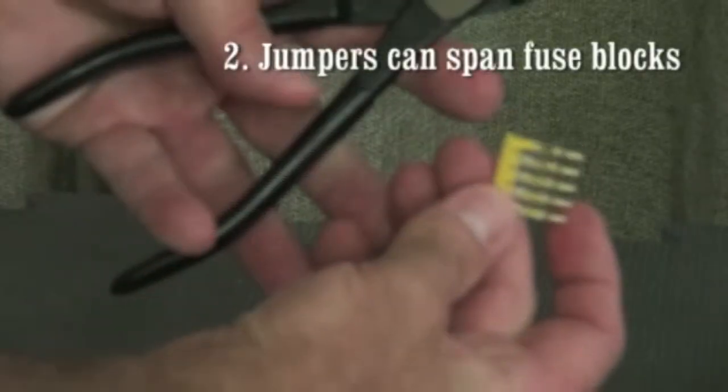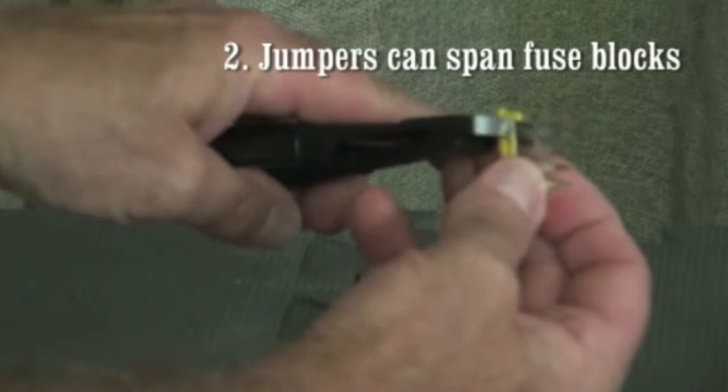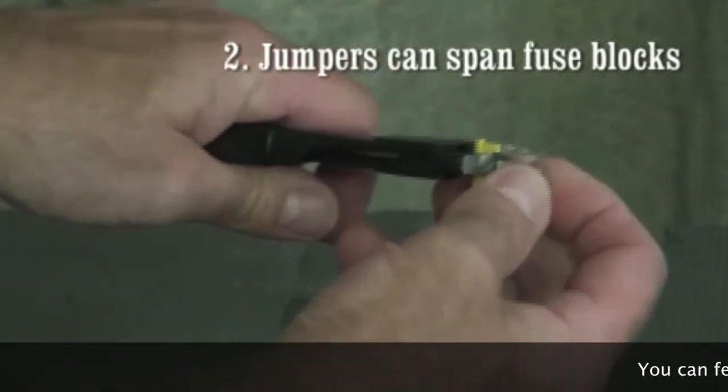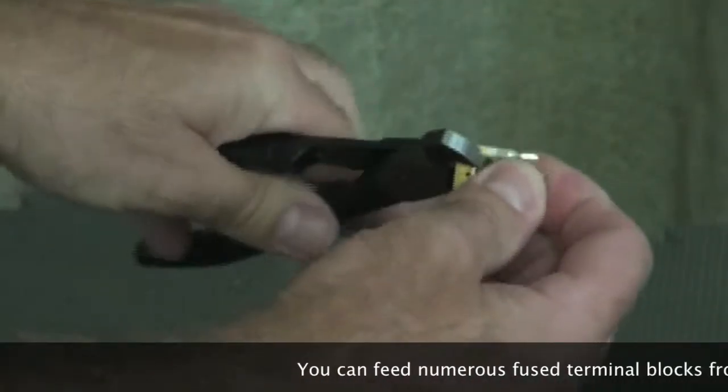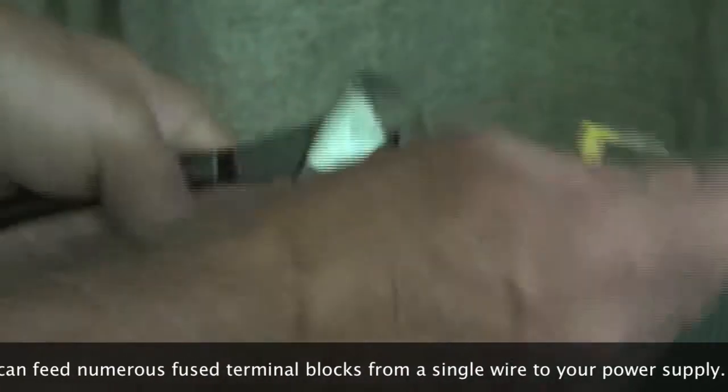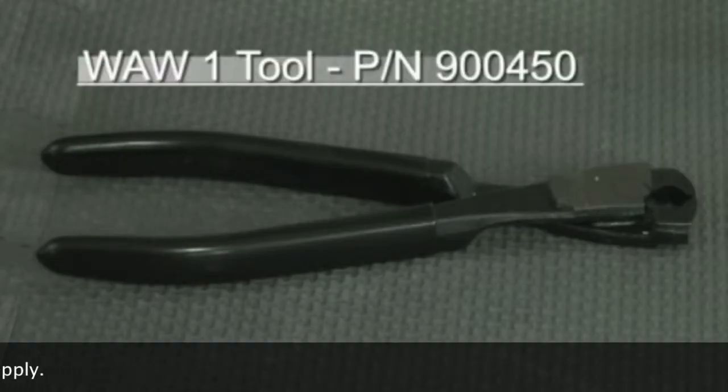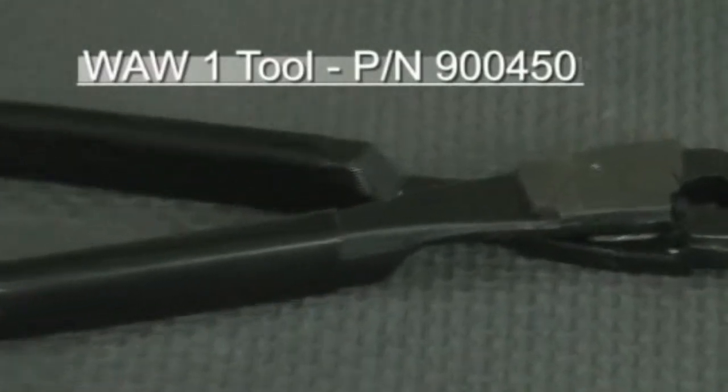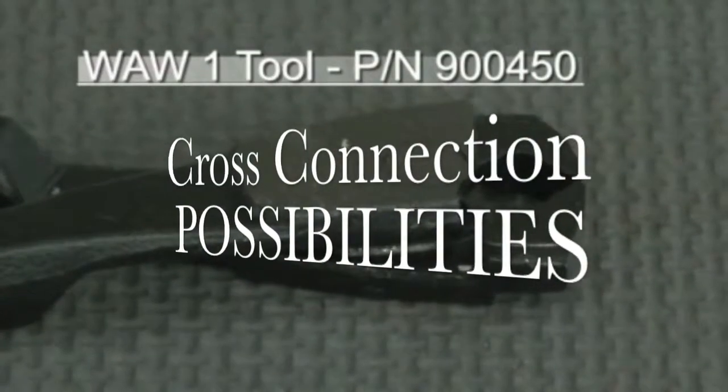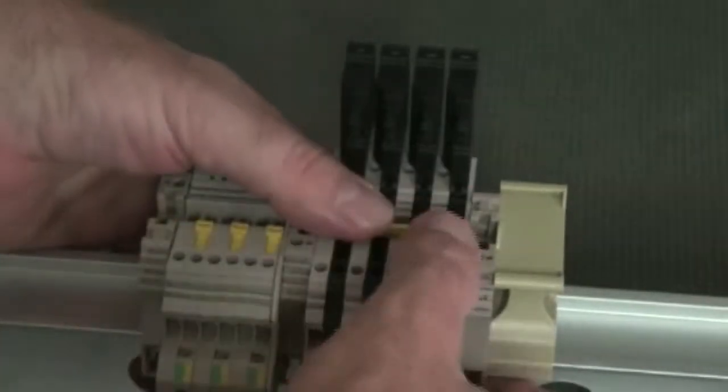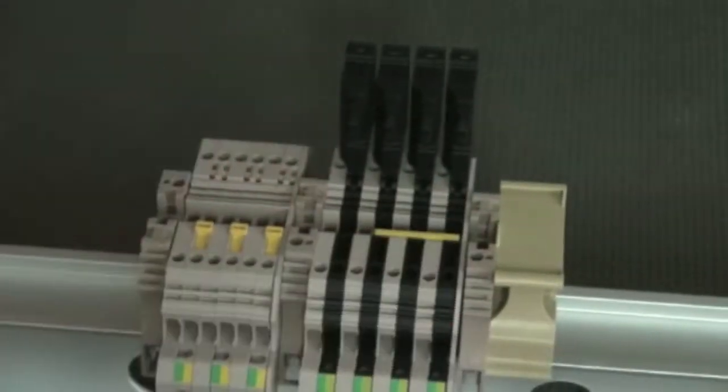Pluggable cross connections or jumpers can span across fuse terminal blocks. This means that you can feed numerous fuse terminal blocks from a single wire to your power supply. Clipping the jumpers provides you with almost unlimited cross connection possibilities. Insertion of the Weidmuller pluggable jumpers is fast and requires no special tools.